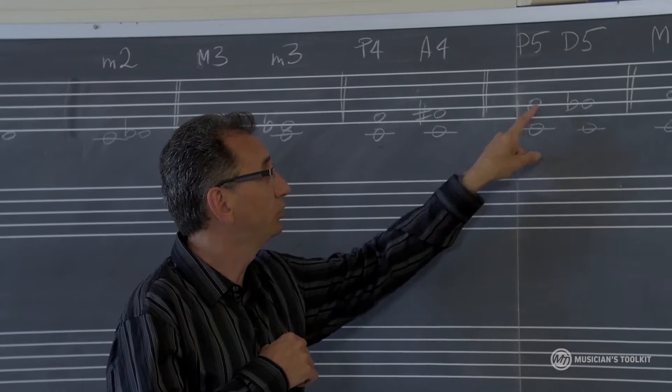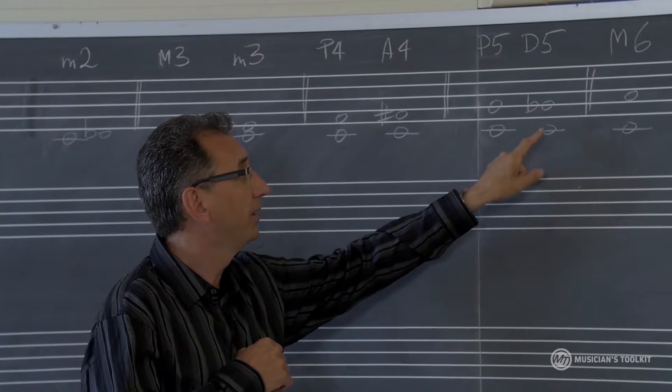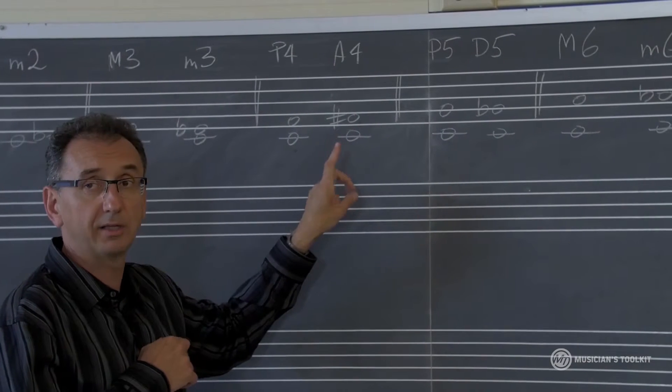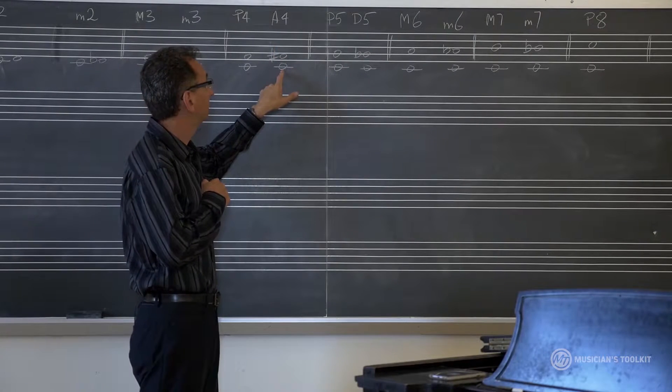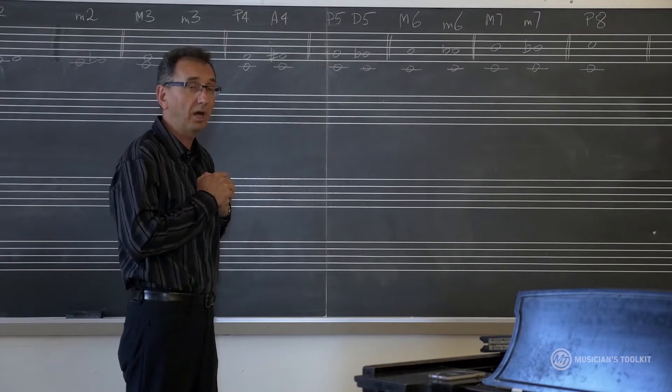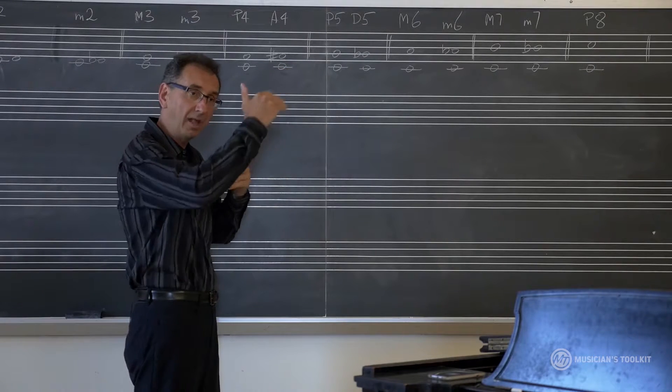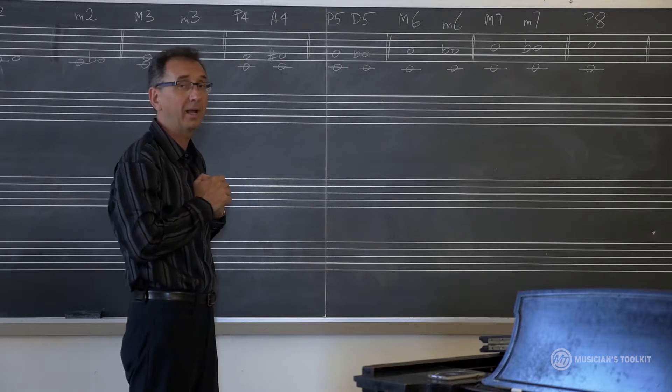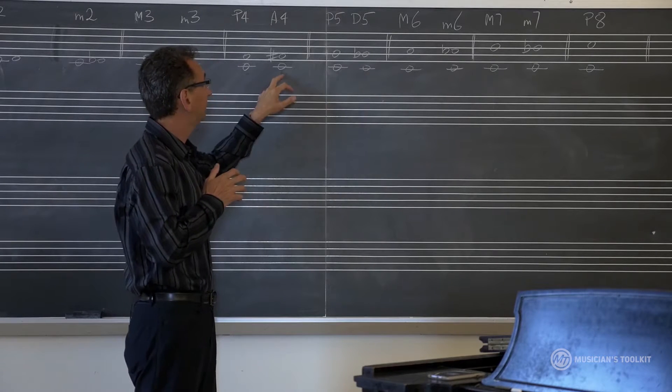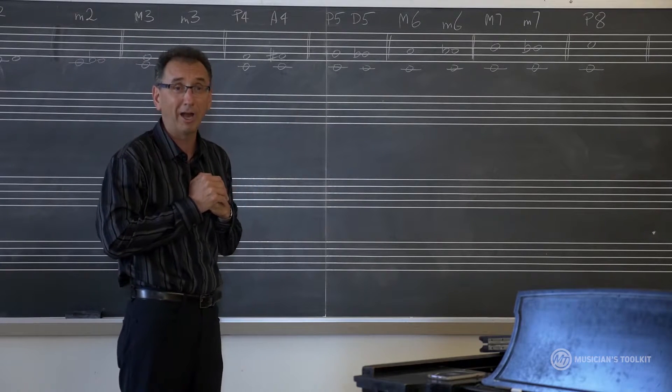Perfect fifth, C to G. Diminished fifth, C to G flat. Notice the difference in spelling: C to F sharp is the augmented fourth, because the distance between C and F is a fourth, and then we raised F sharp to get to augmented fourth. C to F sharp is also known as a tritone.